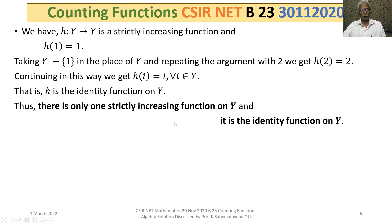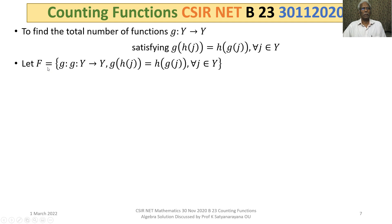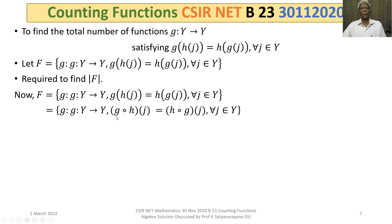This is also a general result. We continue to find the total number of functions g from Y to Y satisfying g(h(j)) = h(g(j)) for all j in Y. Let F be the set of all such functions g; we need to find the order of F. By definition, F is the set of all functions g: Y → Y such that g ∘ h = h ∘ g.